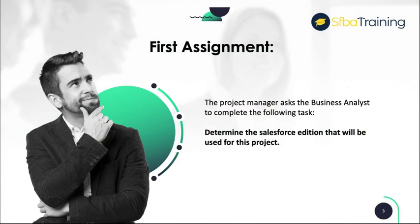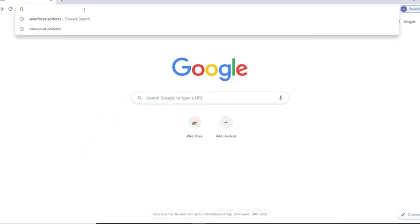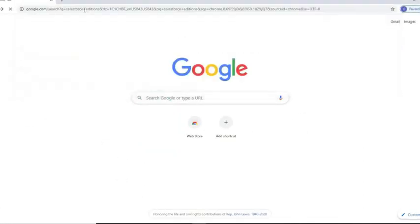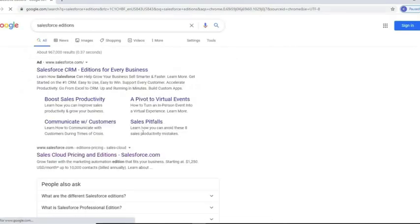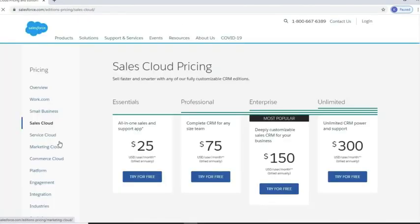First assignment: the project manager asked the business analyst to determine the Salesforce edition that will be used for this project. The first thing the business analyst needs to do is go to the Sales Cloud editions page. We can see that Sales Cloud has four editions.